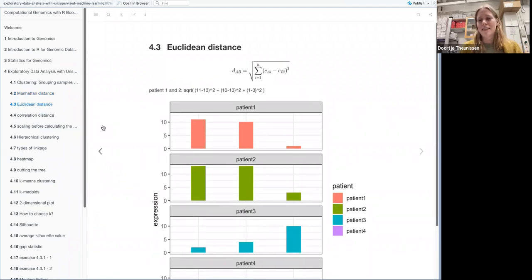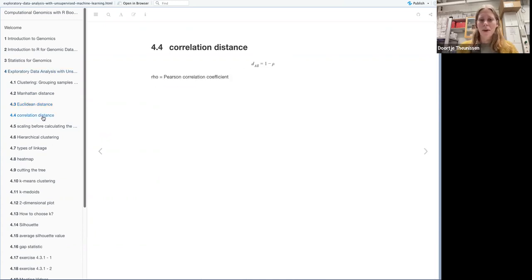And then with the Euclidean distance, it's a little bit different. It's just the square root of the squared differences. And then we have the values for patient one and two again as an example. And then the third one is the correlation distance, which is just one minus correlation of two individuals. And the correlation here is the Pearson correlation coefficient.